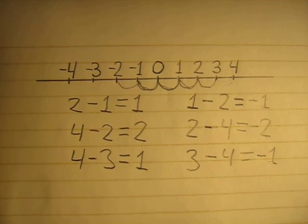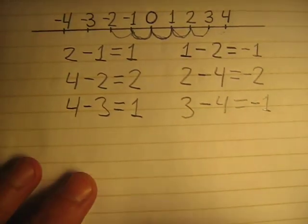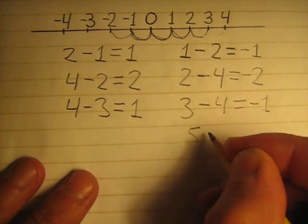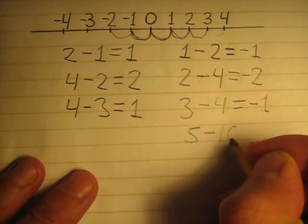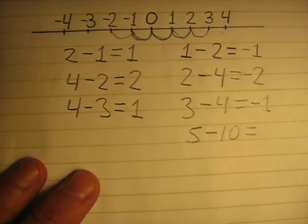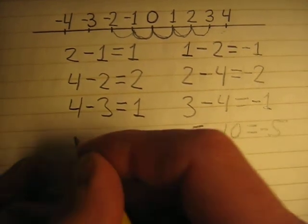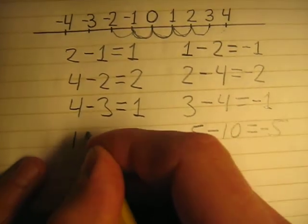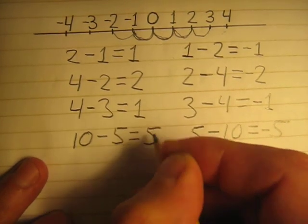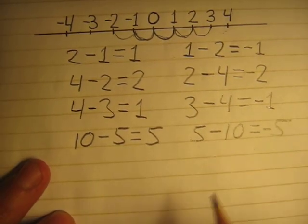Okay, let's consider more examples, but without using number lines. How much is 5 minus 10? The answer is negative 5. Because 10 minus 5 is positive 5, and 5 minus 10 is negative 5.